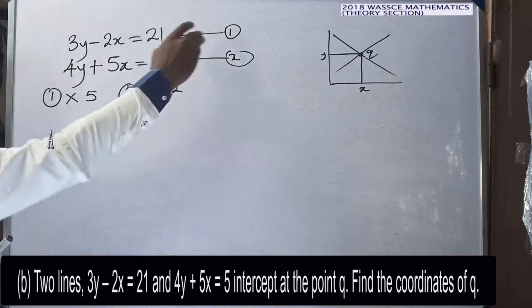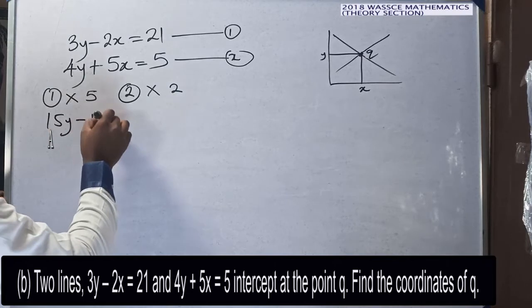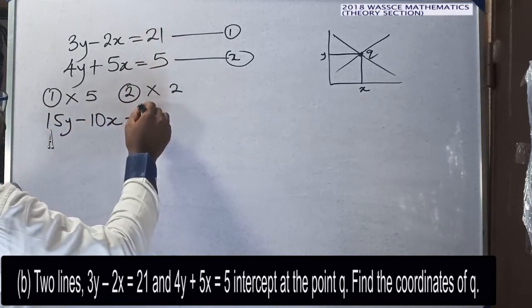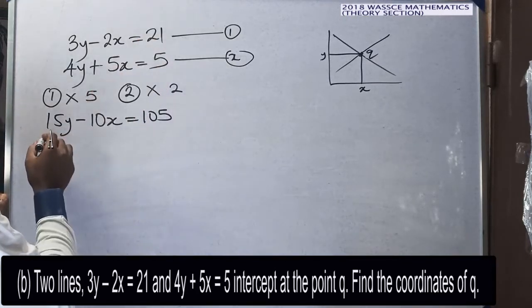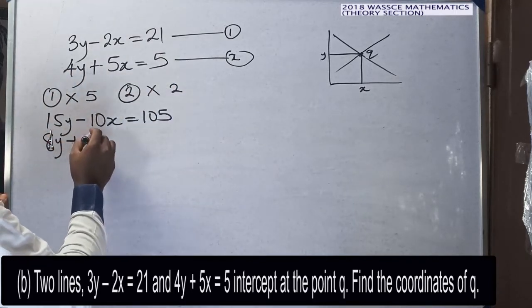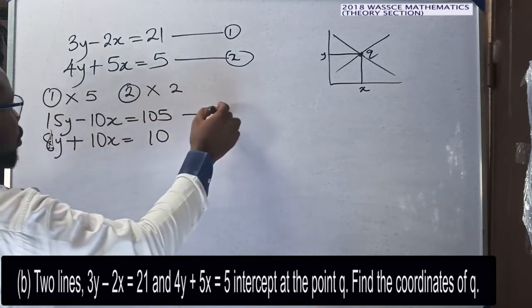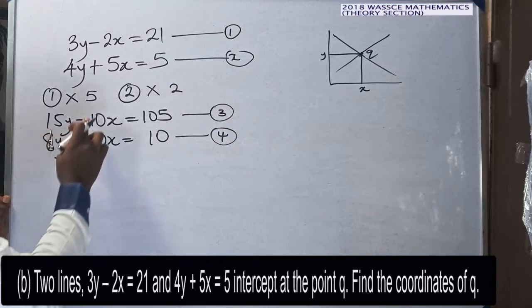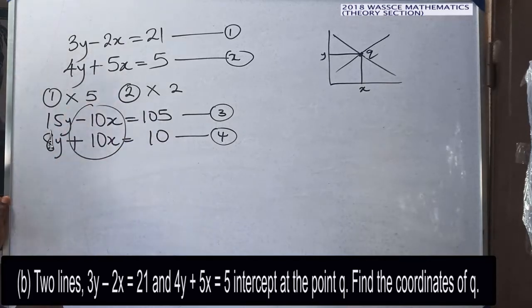Applying equation one by five gives 15y minus 10x equals 105. Then for equation two, applying by two gives 8y plus 10x equals 10. These become equation three and equation four. I can now add them to eliminate x, using the elimination method.